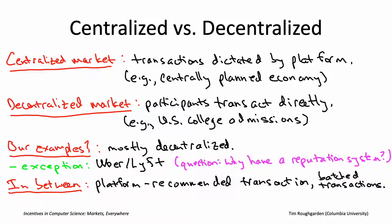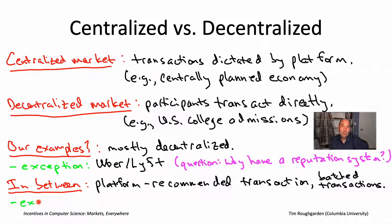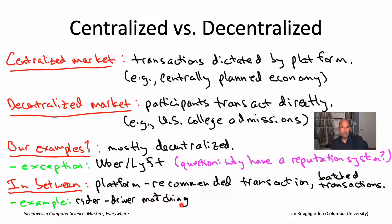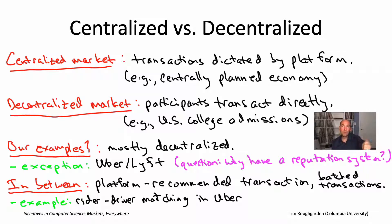For the first example, let's talk about Uber and the algorithm they use under the hood to match riders with drivers. There's a bunch of drivers who are empty and a bunch of riders who need rides — how do you choose which rider gets which driver? Up until 2017, Uber did it in the obvious way: if a new rider shows up, you look at the empty drivers nearby and match that new rider with whichever driver is closest.